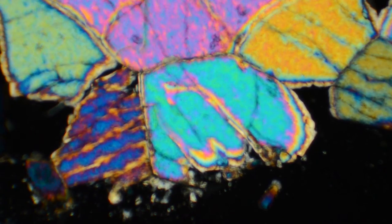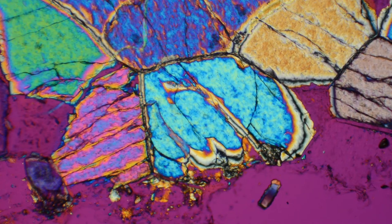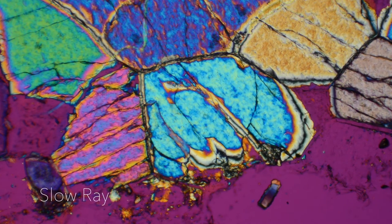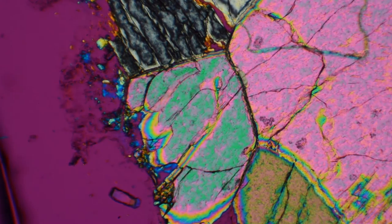Next, I take out my condensing lens and Bertrand lens and switch to a lower objective. Focusing on the same grain, I perform a fast and slow ray determination. Inserting my accessory plate from the southeast, I notice that in this direction, I am looking at the slow ray and in this direction, I am looking at the fast ray.